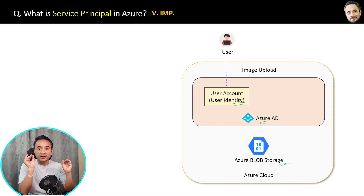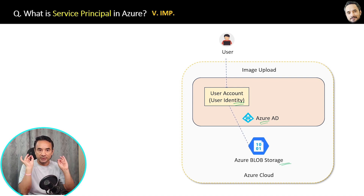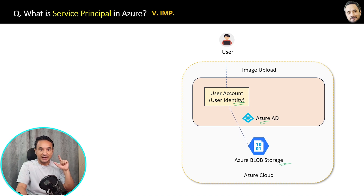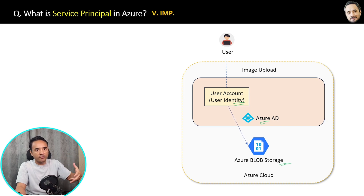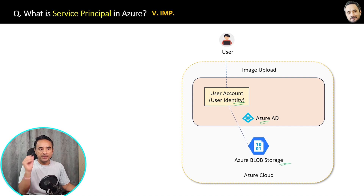Only then will permission be granted to the user to upload the image to Azure Blob Storage. That is a user-based access model — here the application where the user is logging in is acting on behalf of the signed-in user only.